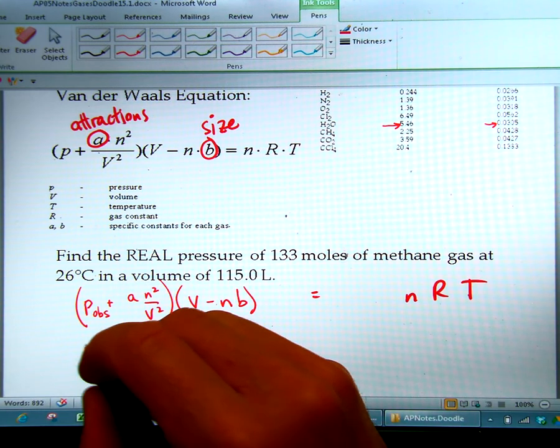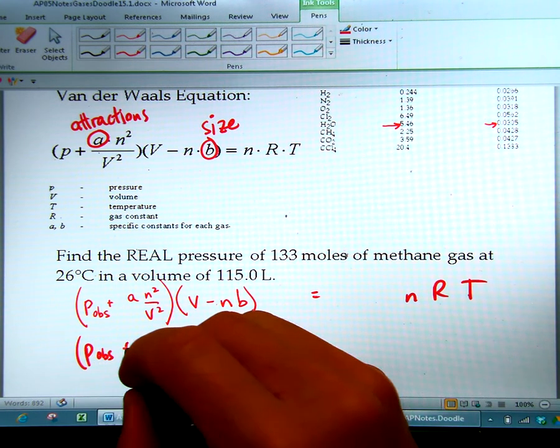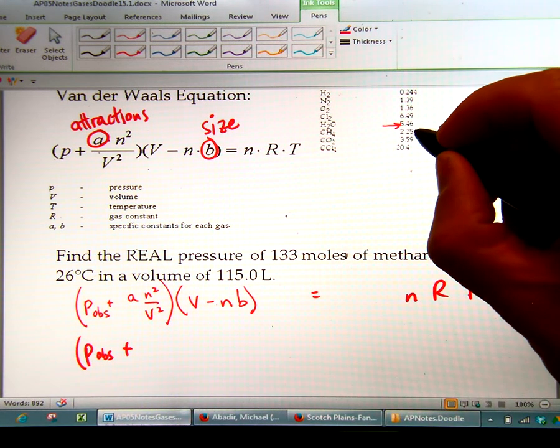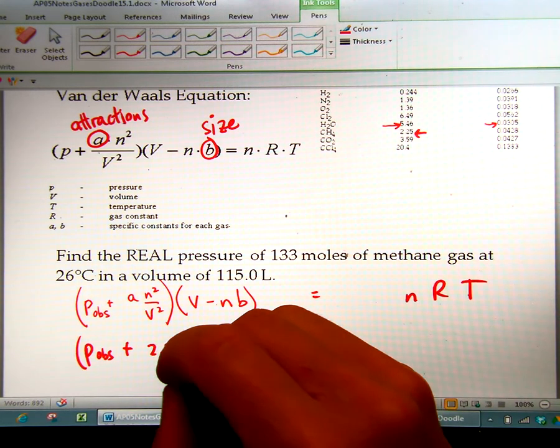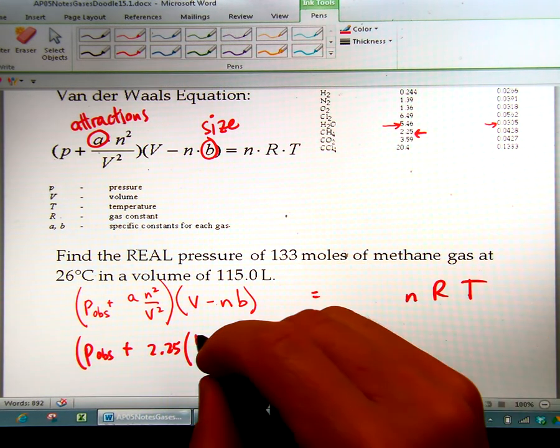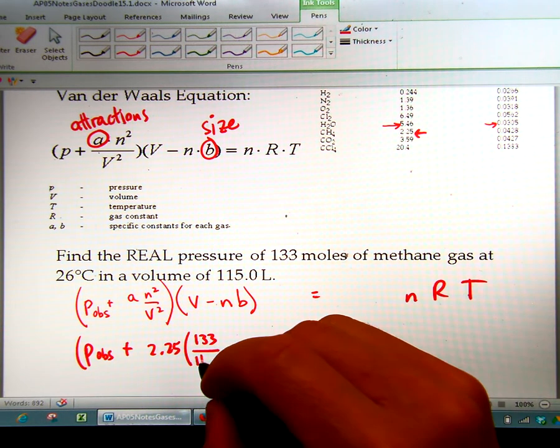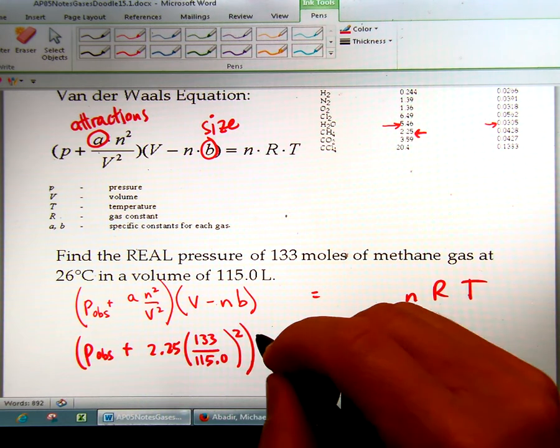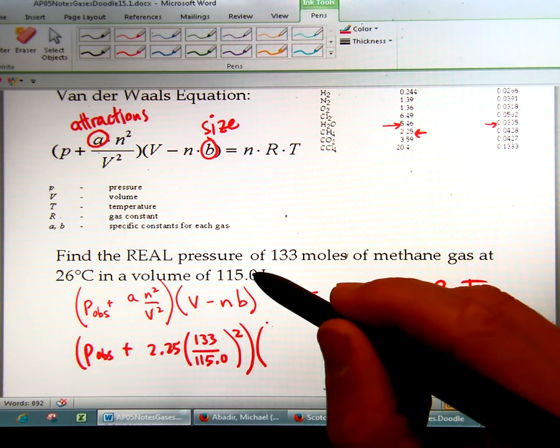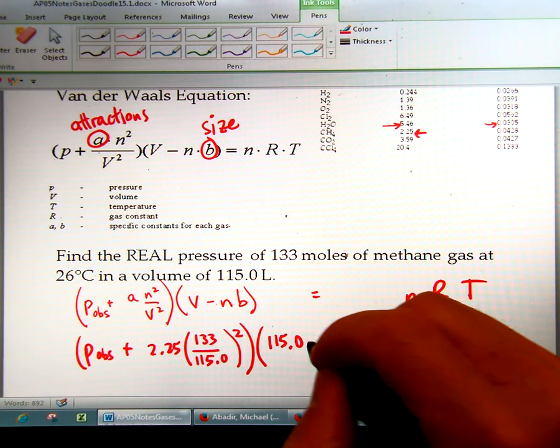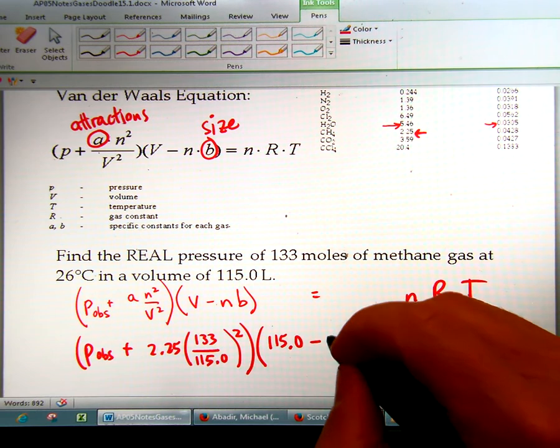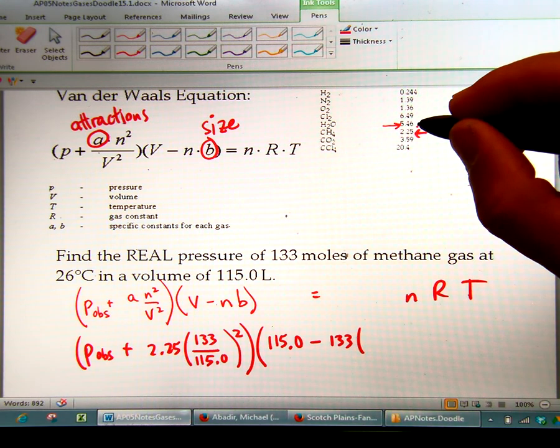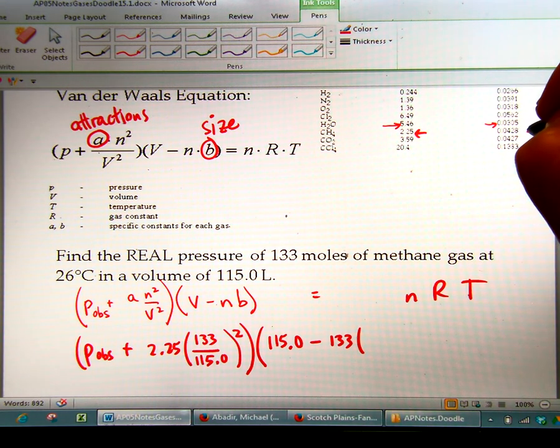We're solving for the P observed. Now we need the A correction factor for methane. Methane is CH4, so the A correction factor is 2.25. So we're going to do 2.25 times N number of moles, 133, over V volume, 115, and we're still using those PV=nRT units. And that's going to be squared. Then we times volume, which is 115, minus N number of moles is 133, times the B correction factor for methane, which is 0.0428.